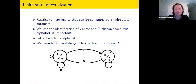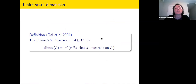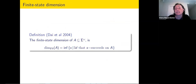Restricting the definition means we take the finite state dimension as the infimum over all gamblers or martingales that can be computed by a finite state machine. So the finite state dimension of a set is the smallest s for which there is a finite state martingale that s-succeeds on the set. This definition was proposed in 2004.